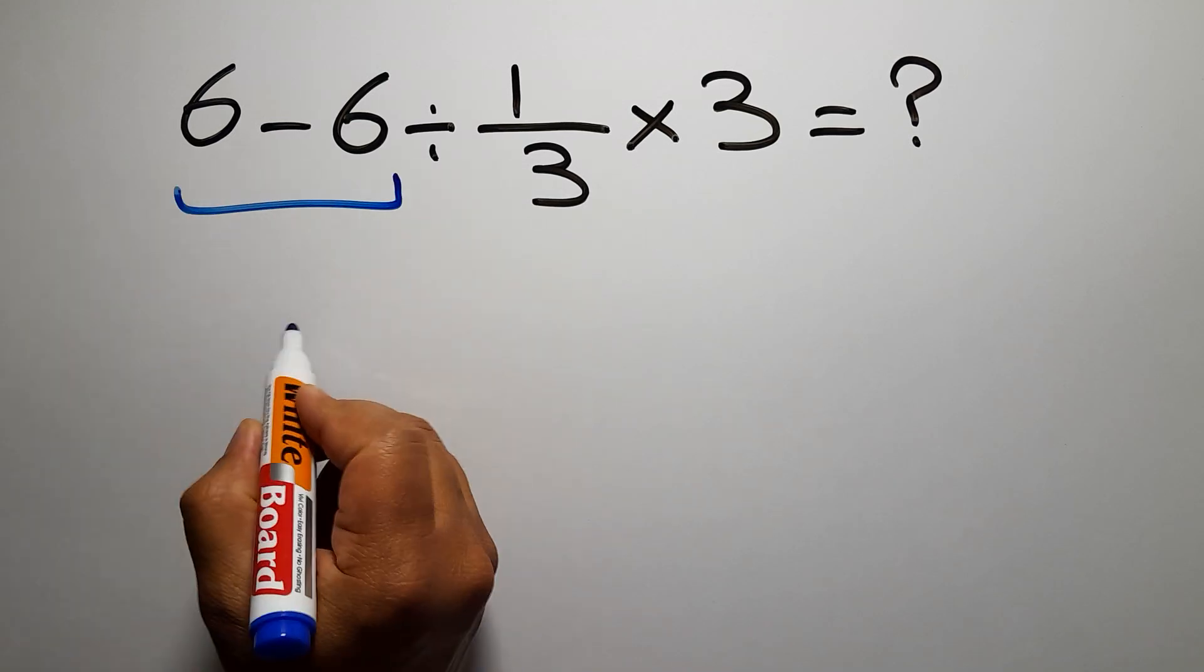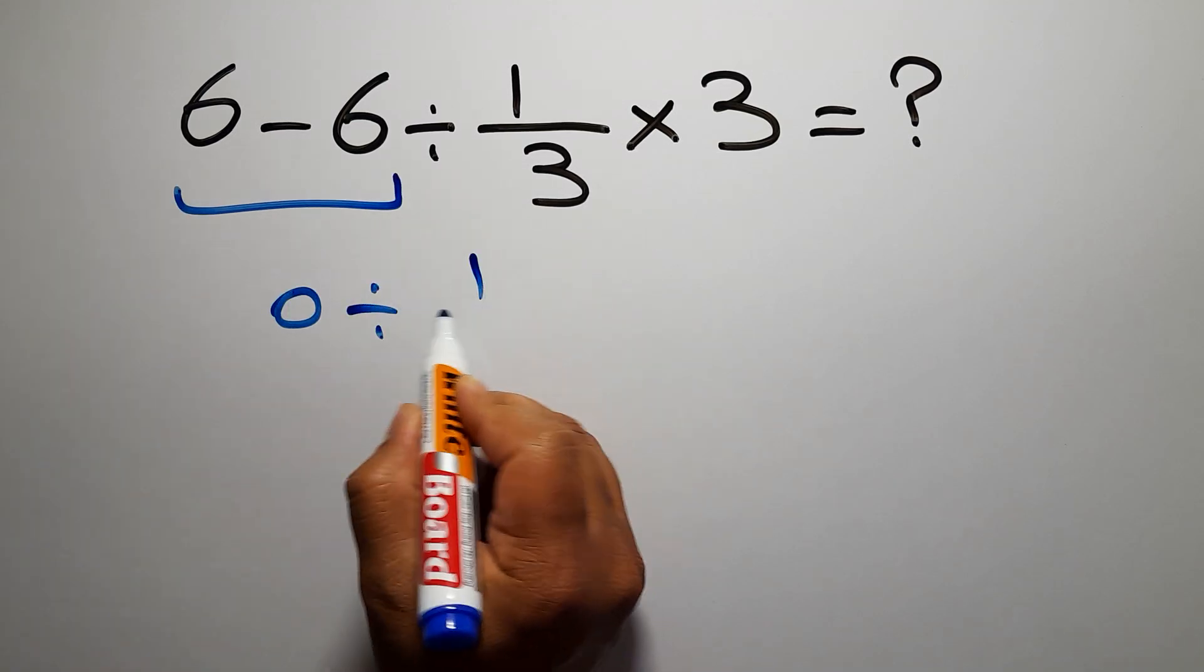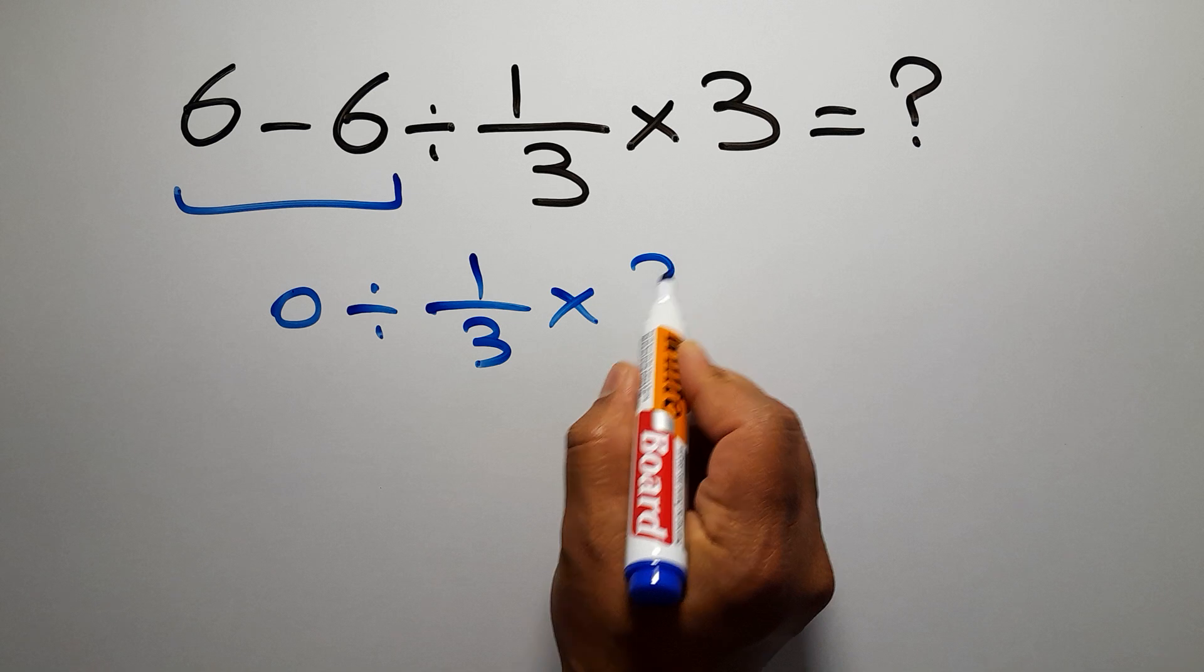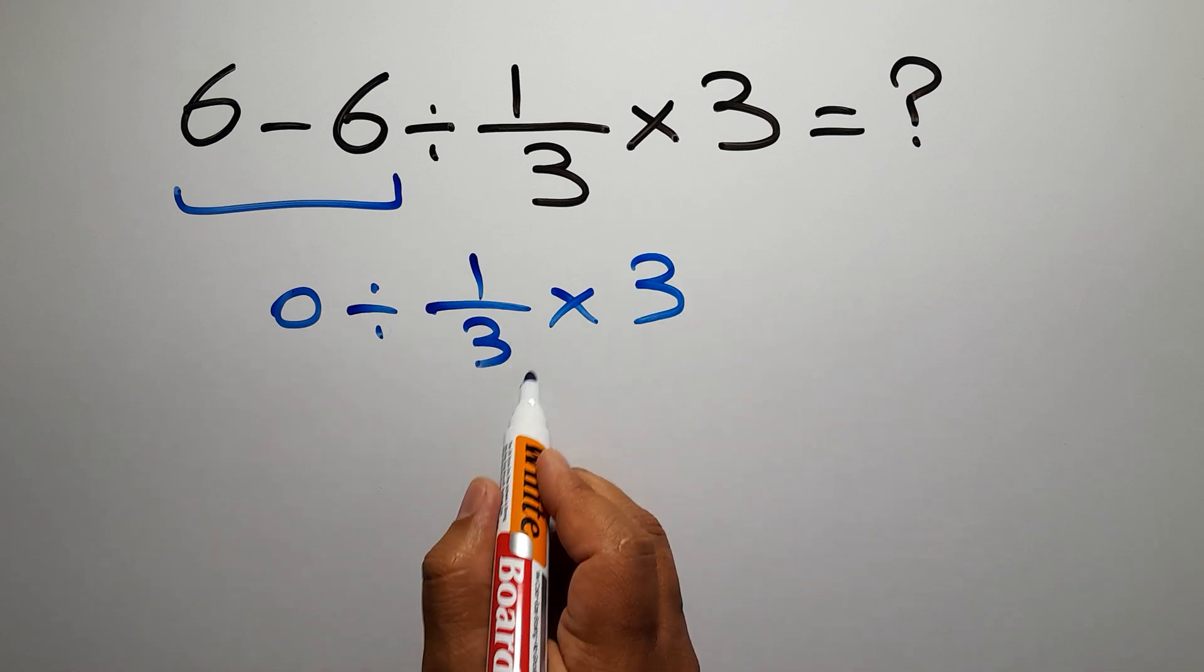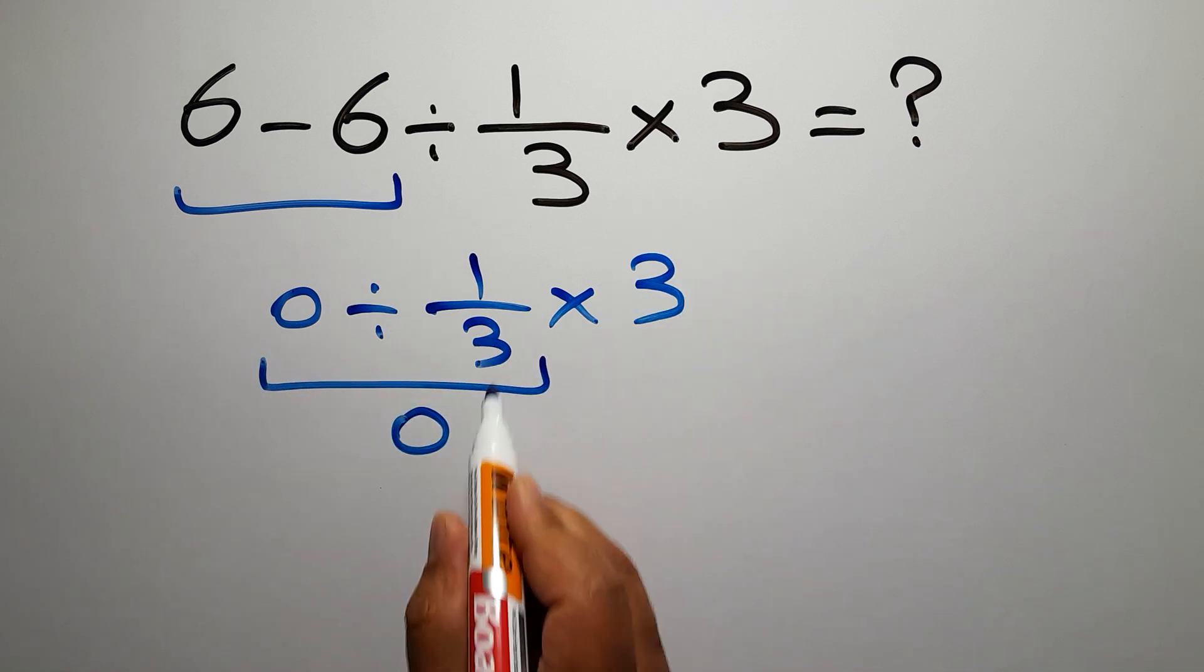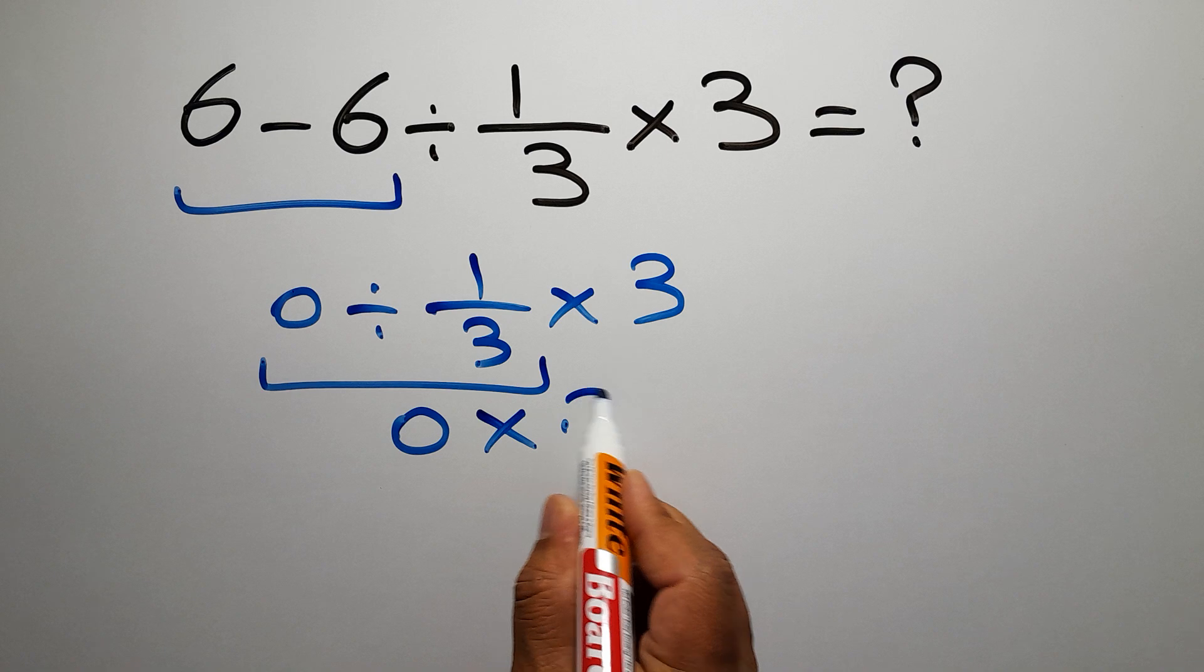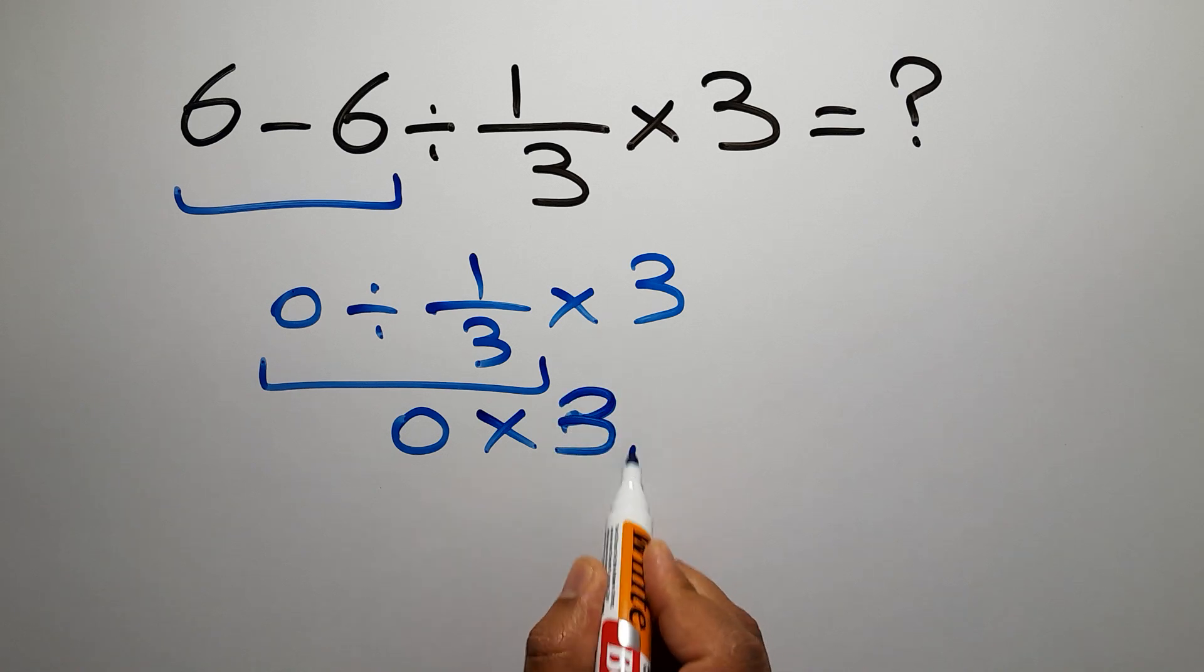6 minus 6 equals 0, so 0 divided by 1 over 3 times 3. 0 divided by any number gives us 0, and 0 times any number gives us 0.